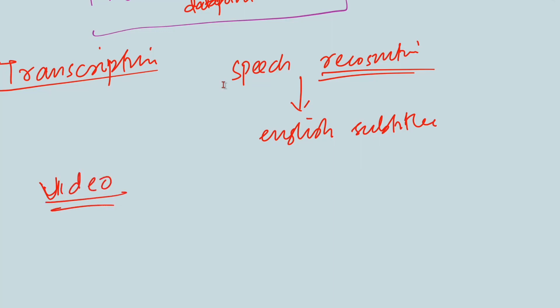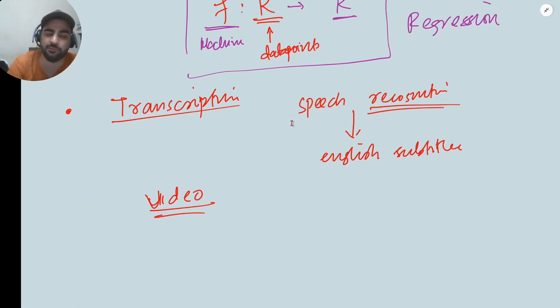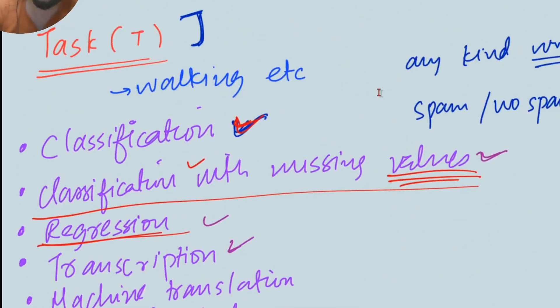If you are watching a video and you have to write the summary of that video, you are doing transcription. You are listening to my lectures and you are trying to note it down — that is a task of transcription. In YouTube, the subtitles are done by machine learning through transcription. Major companies like Microsoft, IBM, and Google use these transcription methods. In meetings, they have live subtitles, take notes, and highlight important points — all of these are transcription.